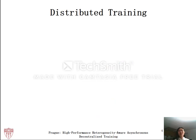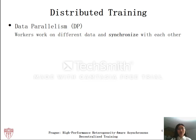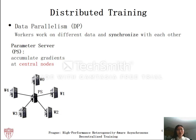There are many approaches to distributed training, for example data parallelism, model parallelism, and hybrid parallelism. In this work we use data parallelism, which is a preferable choice due to its high throughput and also the focus of many machine learning frameworks. In data parallelism, different workers work on different data and synchronize with each other. As the scale of training becomes larger and more workers are involved, it is increasingly important and challenging for workers to synchronize timely. The traditional way of synchronization is via parameter servers, where gradients computed by workers are accumulated at central nodes called parameter servers.